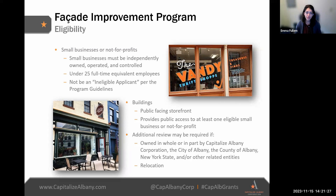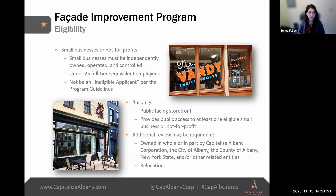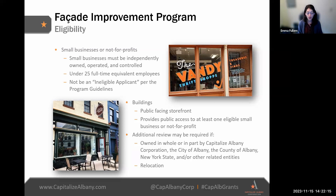Full-time equivalent employees is a calculation combining part-time and full-time employees. For example, two part-time employees each working 20 hours totaling 40 hours a week would equate to one full-time equivalent employee. The application has a calculator so you won't need to do the math yourself. Additionally, convenience retail stores must be committed to carrying fresh produce for the term of the grant. For building eligibility, the building must have a public-facing storefront on the first floor with street-front presence, and must provide public access to at least one eligible small business or not-for-profit.